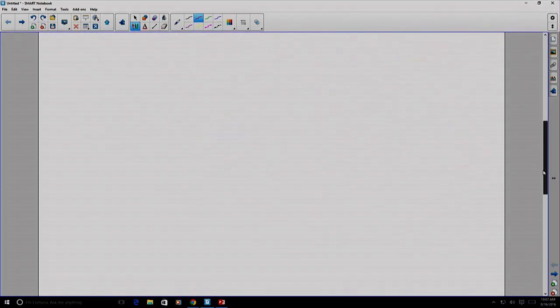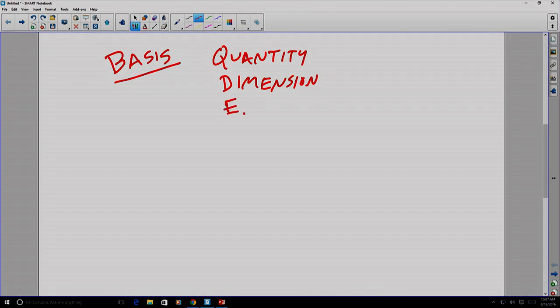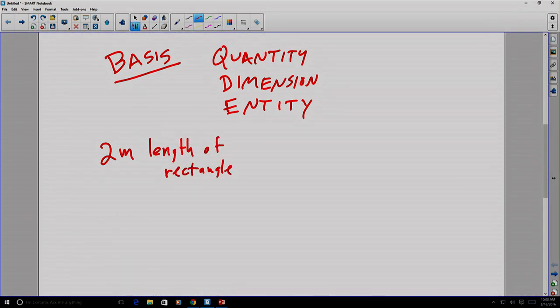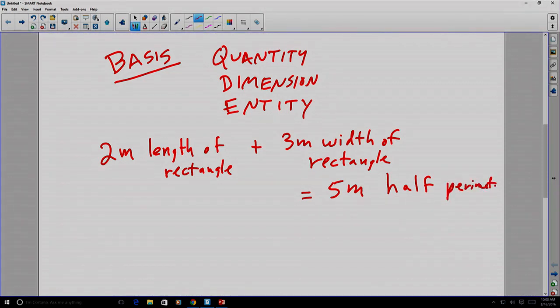Notice that the usefulness of the sum depends on the basis of the scalar values. In other words, how we defined it, i.e. the quantity, the dimension, and the entity that are being considered. For example, let's say we want to add a two-meter length of rectangle to a three-meter width of the rectangle. Well, we can definitely add two meters to three meters. That gives us five meters. But what is that five meters? Well, that five meters is half the perimeter of the rectangle.